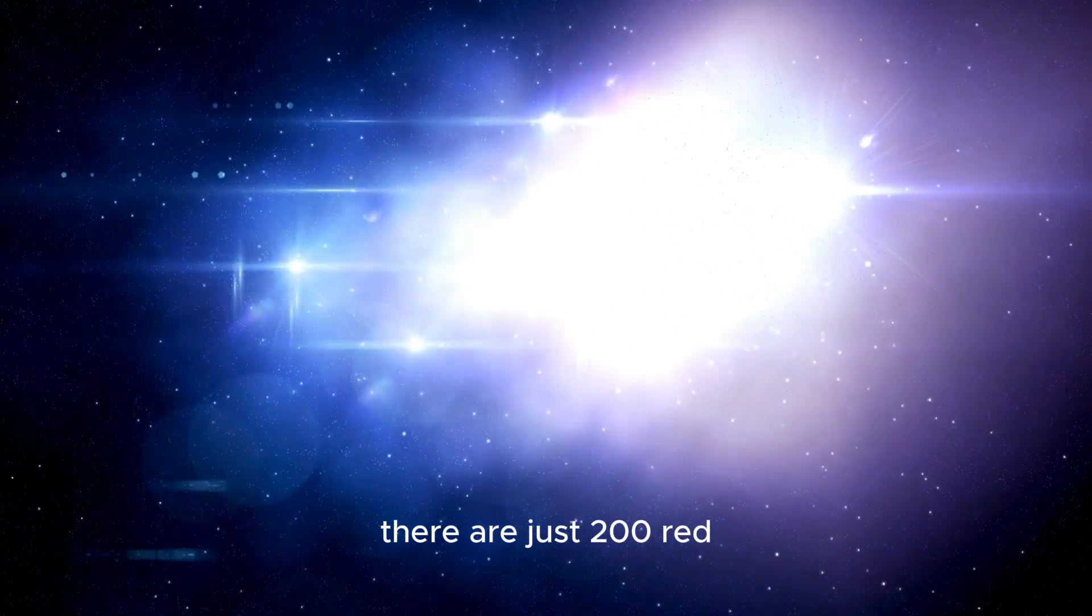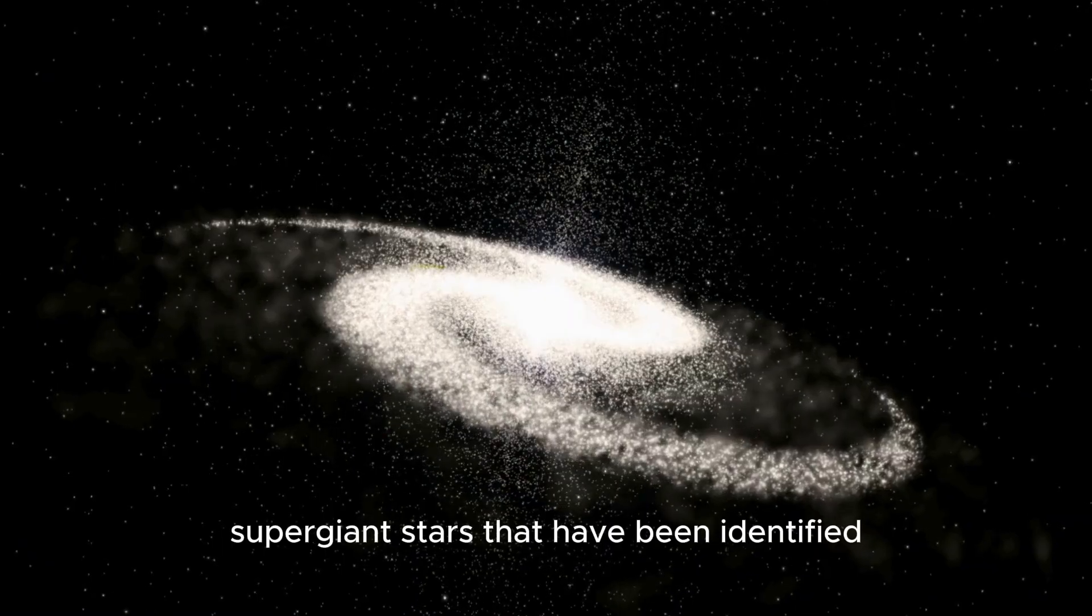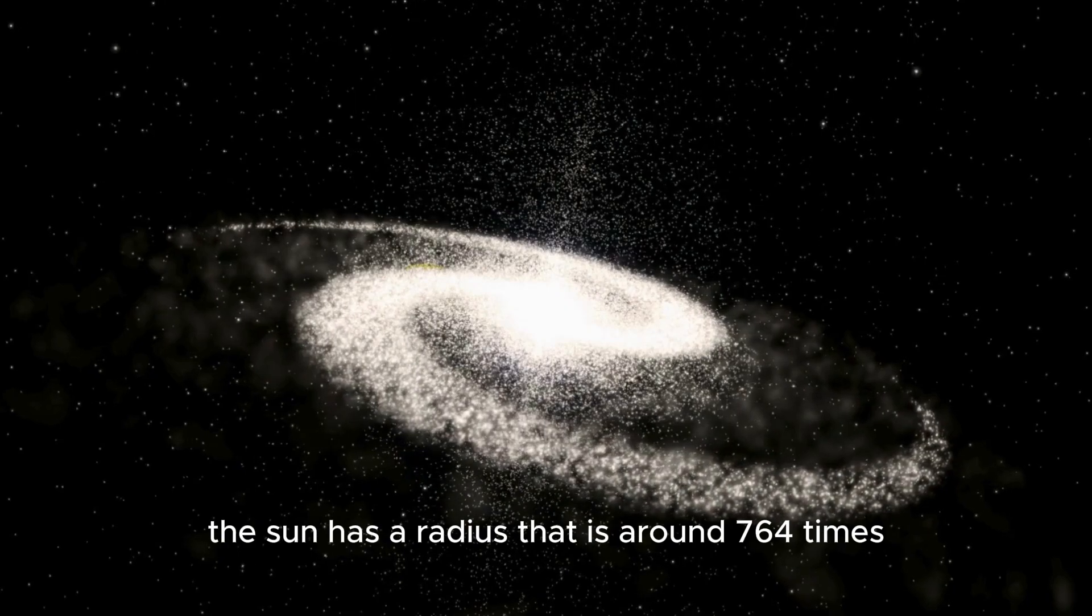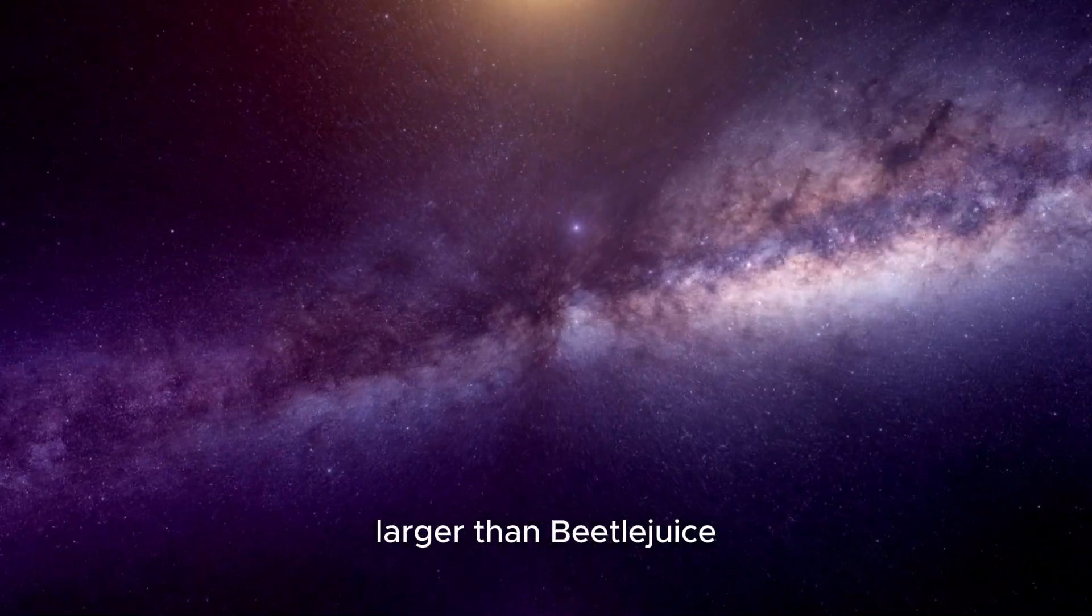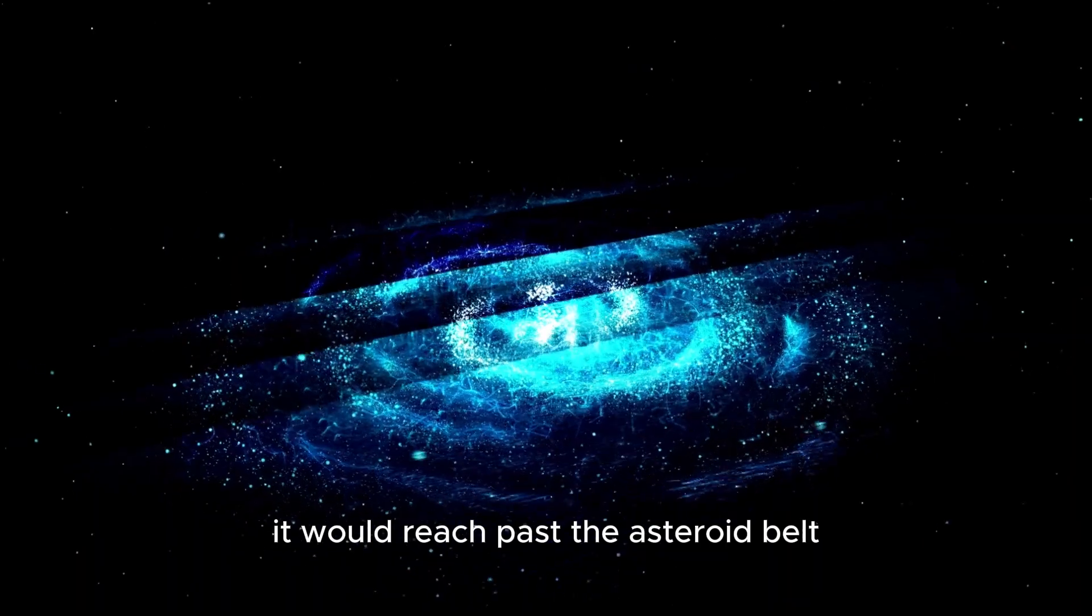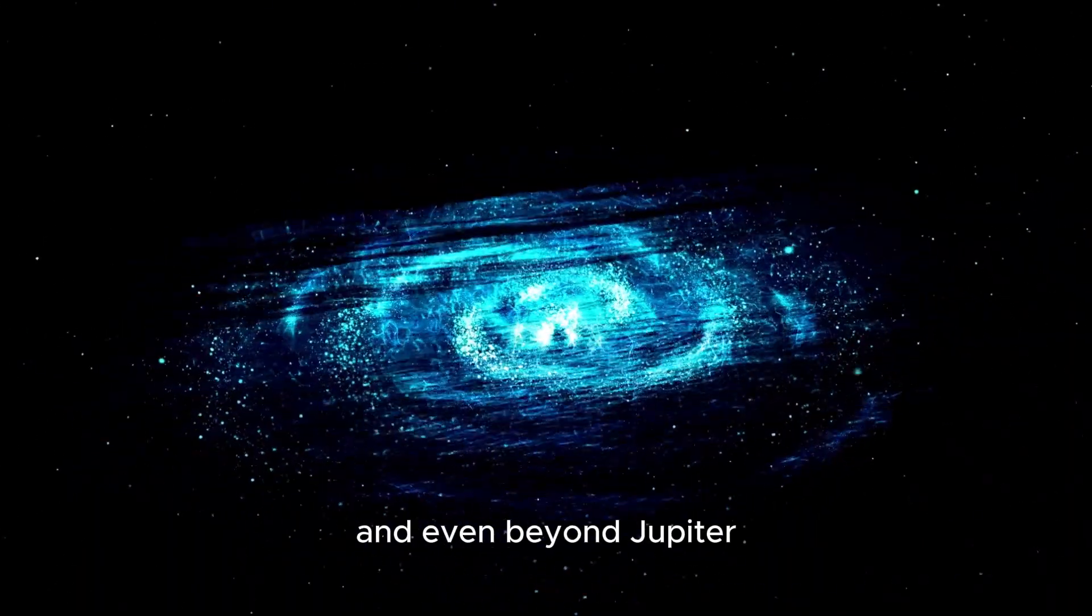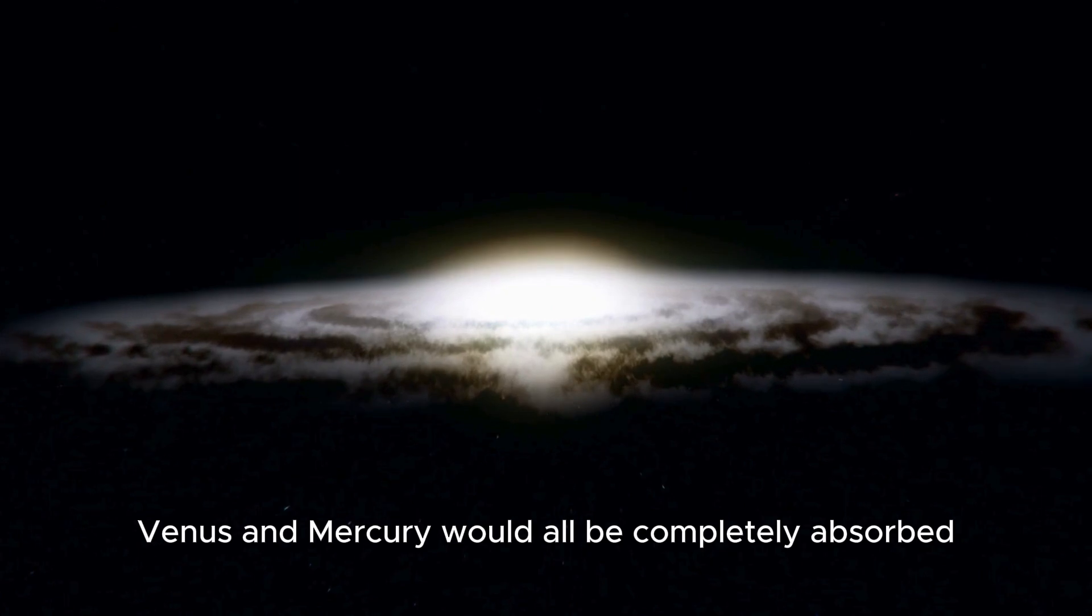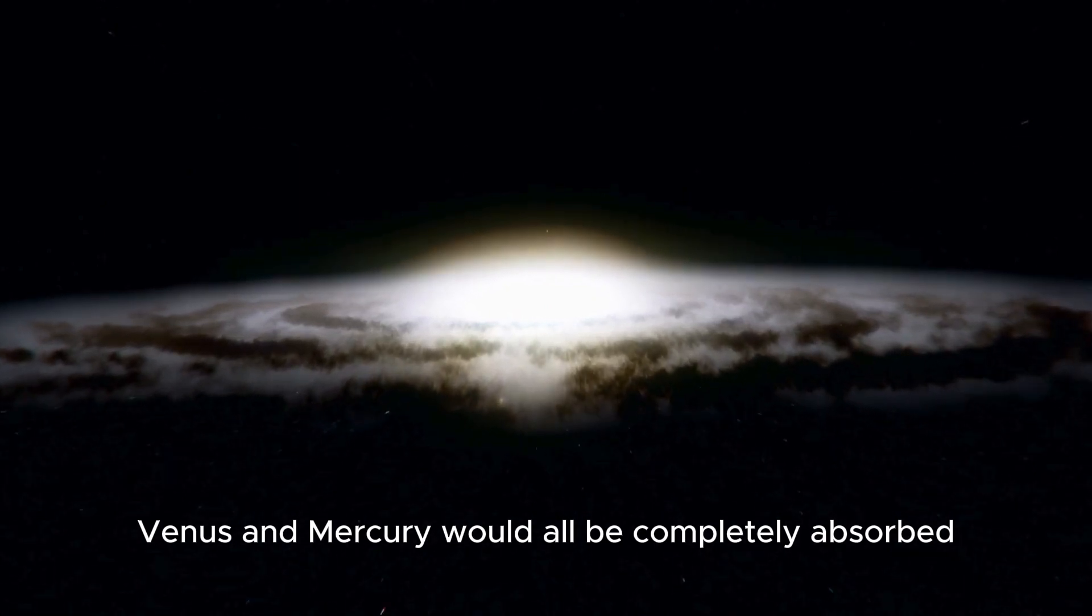There are just 200 red supergiant stars that have been identified. The Sun has a radius that is around 764 times smaller than Betelgeuse. If this star replaced our Sun in the solar system, it would reach past the asteroid belt and even be on Jupiter. This suggests that Earth, Mars, Venus, and Mercury would all be completely absorbed.